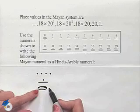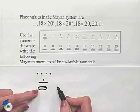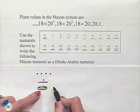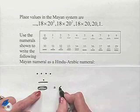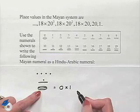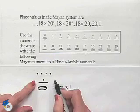That would be the ones place. This symbol is our symbol for 0, so we interpret this as meaning 0 times 1. As we move up, we're going to our next place value.